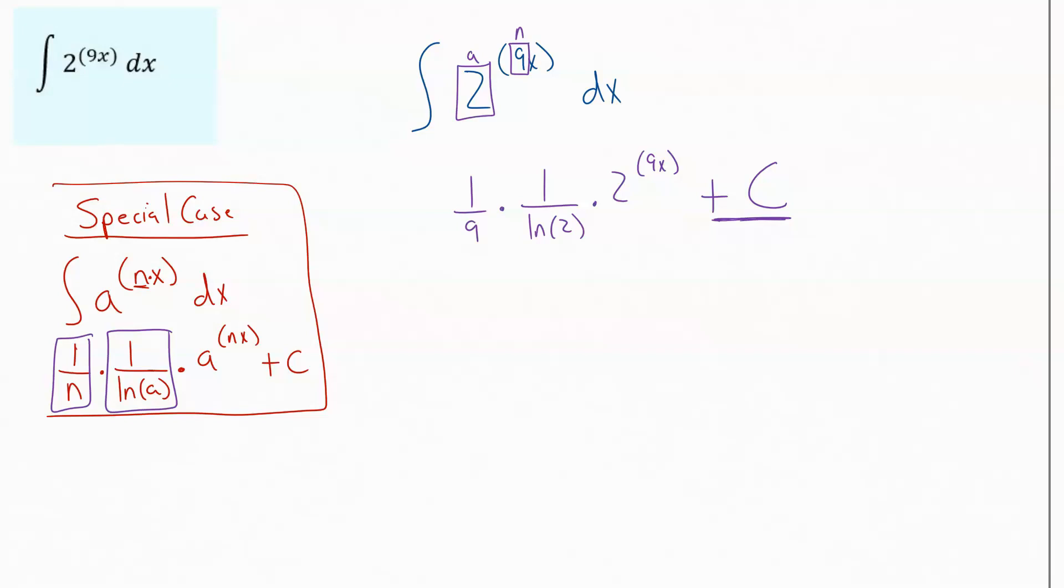And no matter what that constant was, the derivative of a constant is always 0. So we keep track of the fact that there could have been a constant by always putting that plus c. So our indefinite integral of this given exponential equation looks like that.